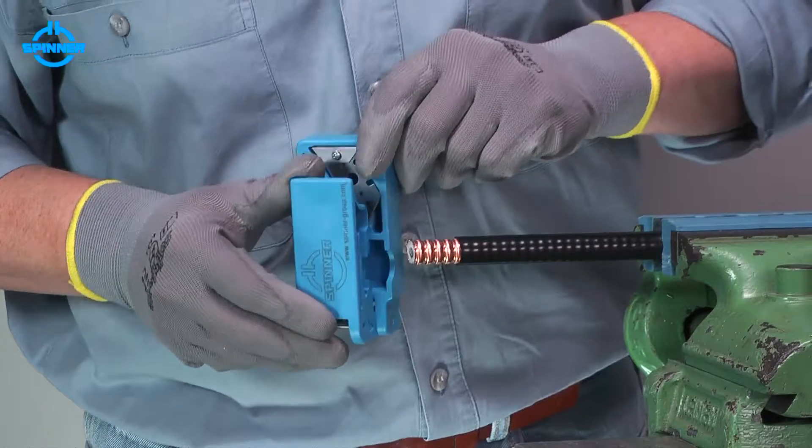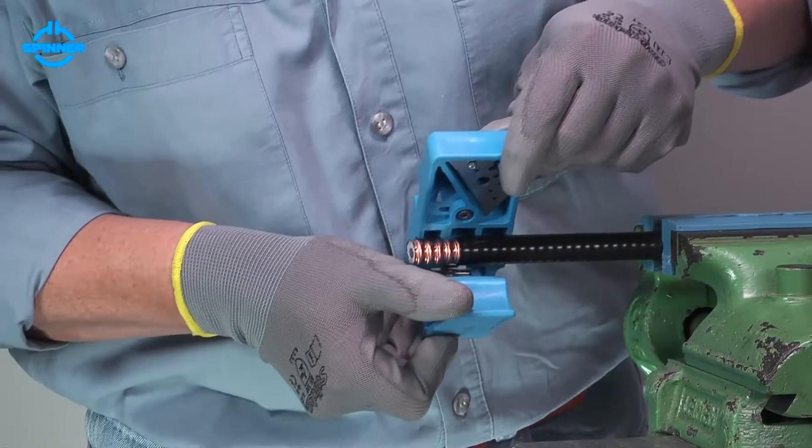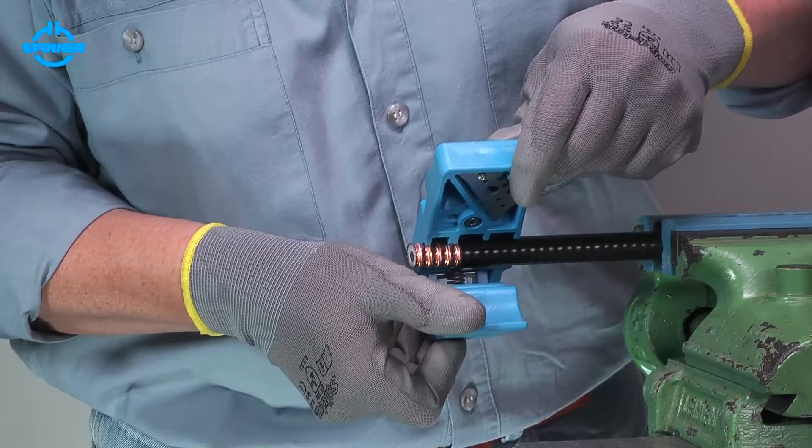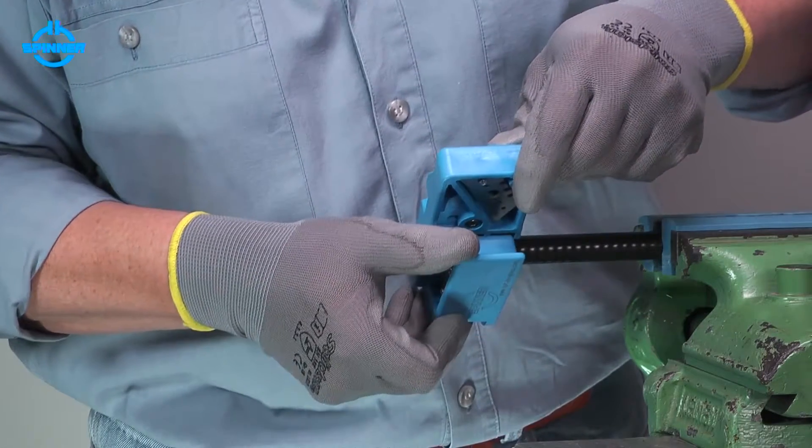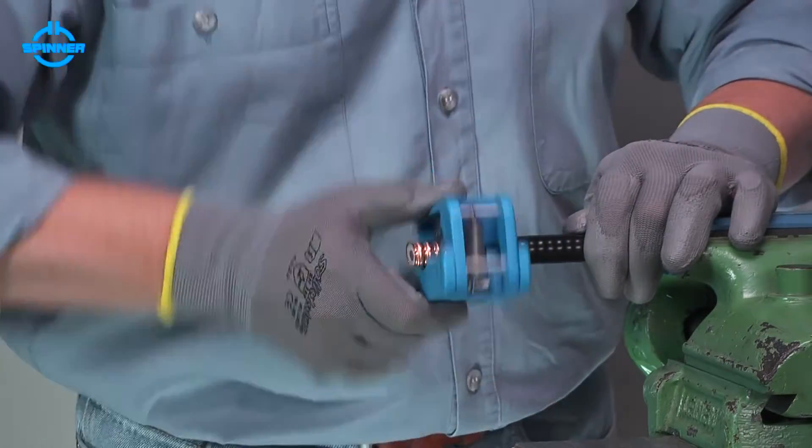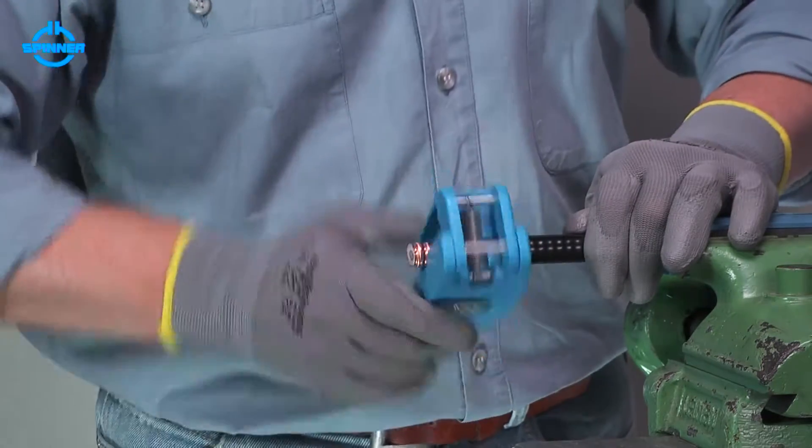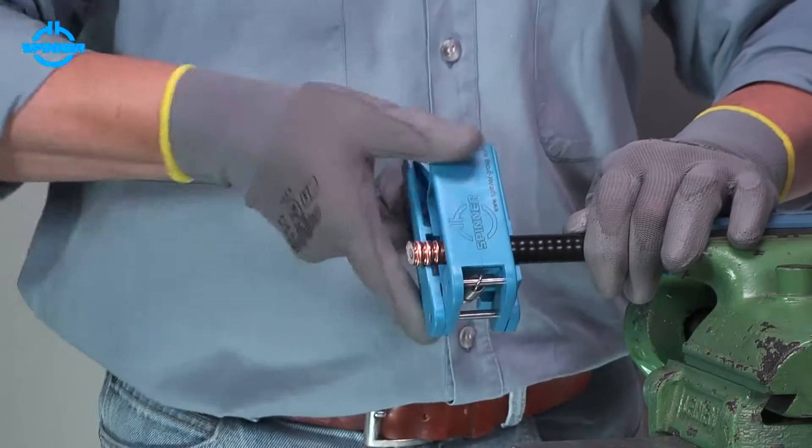Place the collet guide of the trimming tool in the corrugation nearest to the trimmed jacket. Close the tool gently and rotate clockwise until the blade has cut the outer conductor and foam.